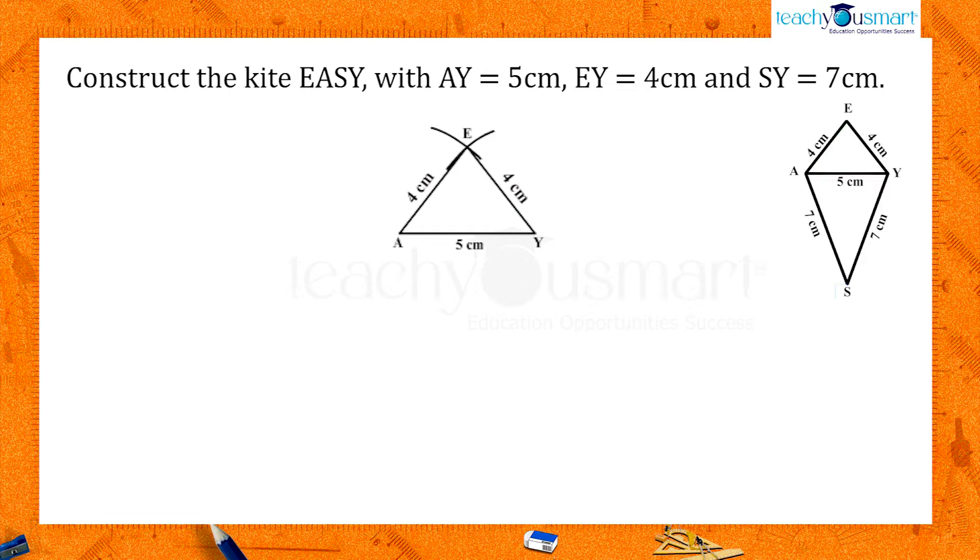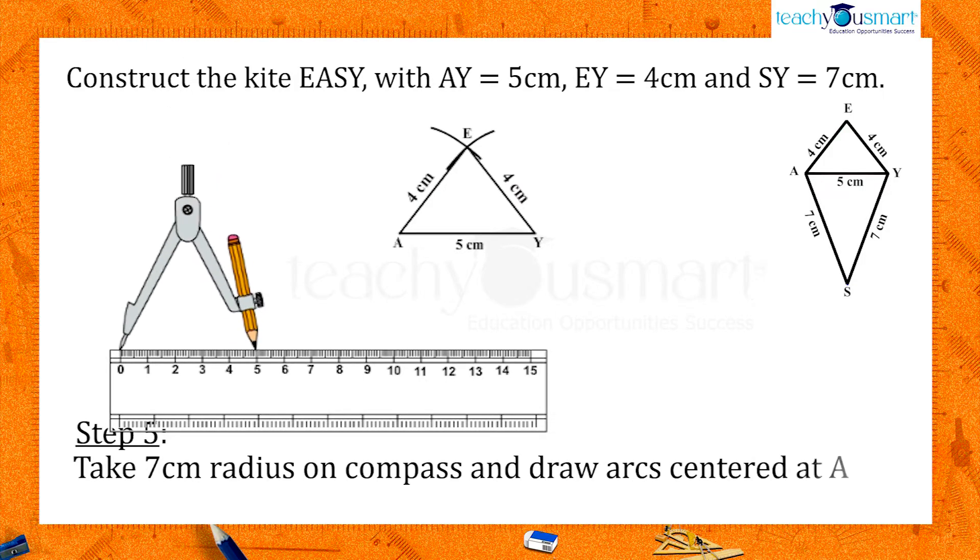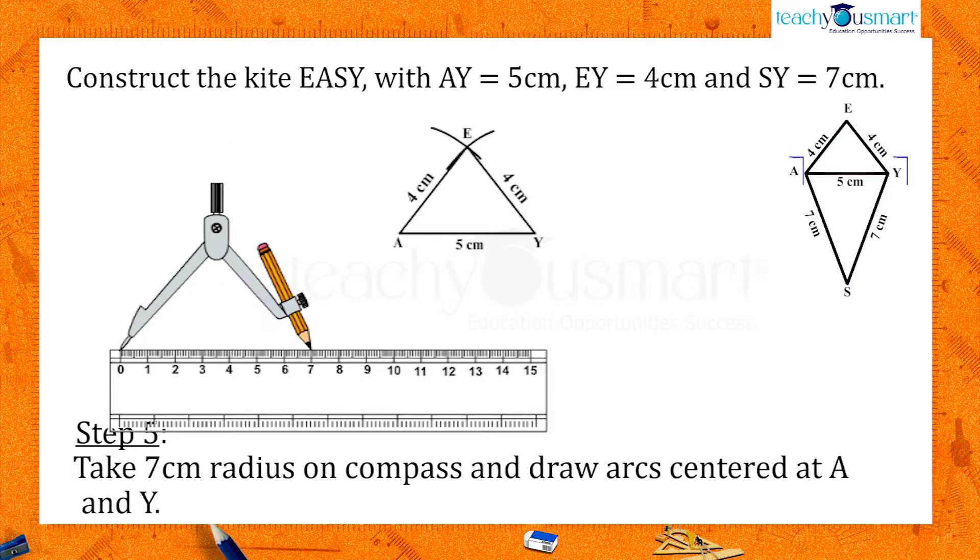Point S is 7 cm away from both A and Y. So take 7 cm radius on compass and draw arcs centered at A and Y.